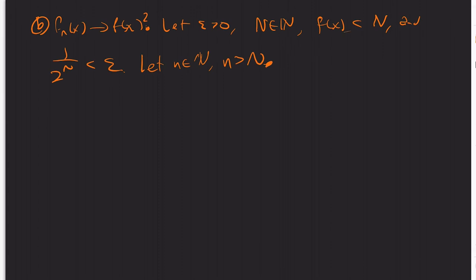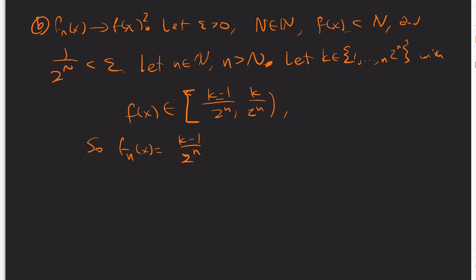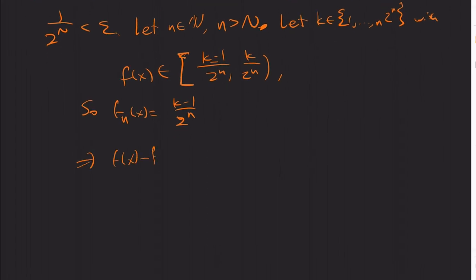So that F of X is still less than N. So let K be between 1 and 2 to the N with F of X being in this closed interval. Very similar argument here. So F_n of X is just equal to K minus 1 over 2 to the N. But that tells us that F of X minus F_n of X is also equal to the absolute value, right, so F is greater than or equal to F_n by construction. And this is less than 1 over 2 to the N, which is less than or equal to 1 over 2 to the N less than epsilon. And we're done. We get convergence there.